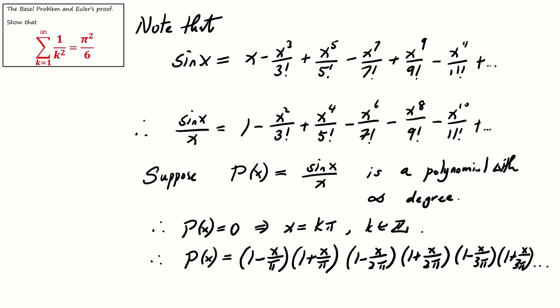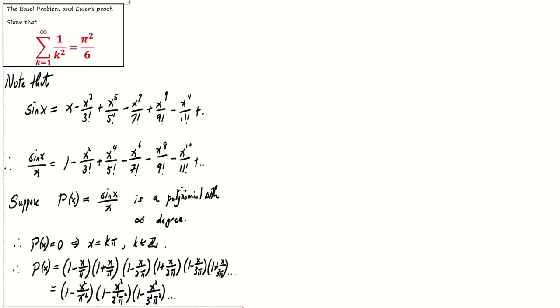The first two terms give us (1 minus x squared over pi squared), the next two terms give us (1 minus x squared over 2 pi squared), followed by (1 minus x squared over 3 pi squared), and so on. Now we successfully write p(x) into a few different forms.